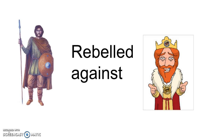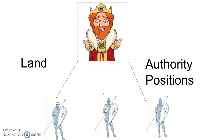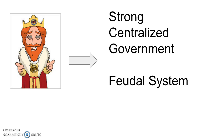Despite William I being relatively nice to the upperclassmen of England, they started a rebellion in 1068, which was put down very quickly. After this rebellion, William I established a feudal system in which most of the land owned by aristocrats was given to the King's Norman followers.